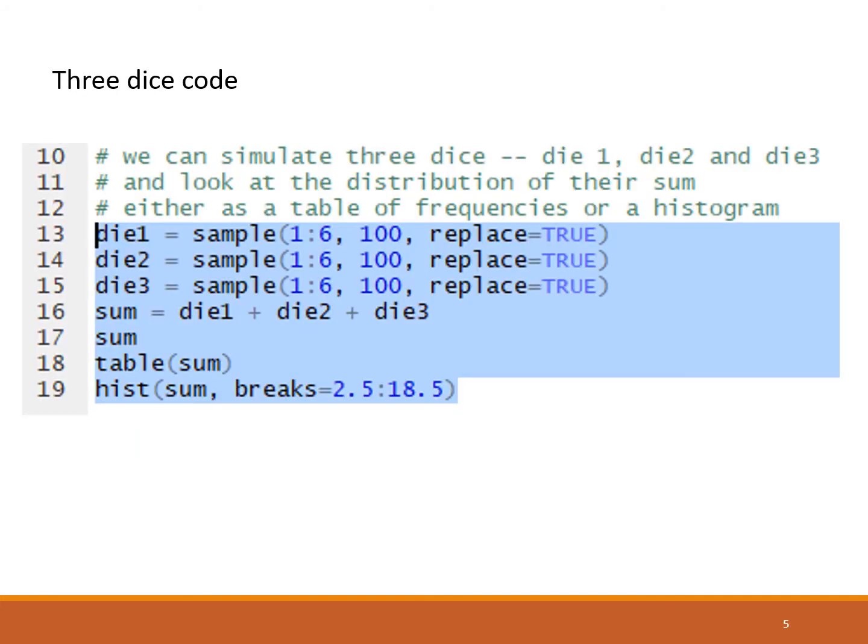Here we are extending the result to 3 dice. Die 1 is sample of 1 to 6, 100 replace true, and we do that for die 1 and die 2 and die 3. We're summing all the die, so sum is die 1 plus die 2 plus die 3. The die were all vectors of length 100, and then we're adding them. Sum is a vector of length 100. Sum in line 17 will just spew out the results down in the console.